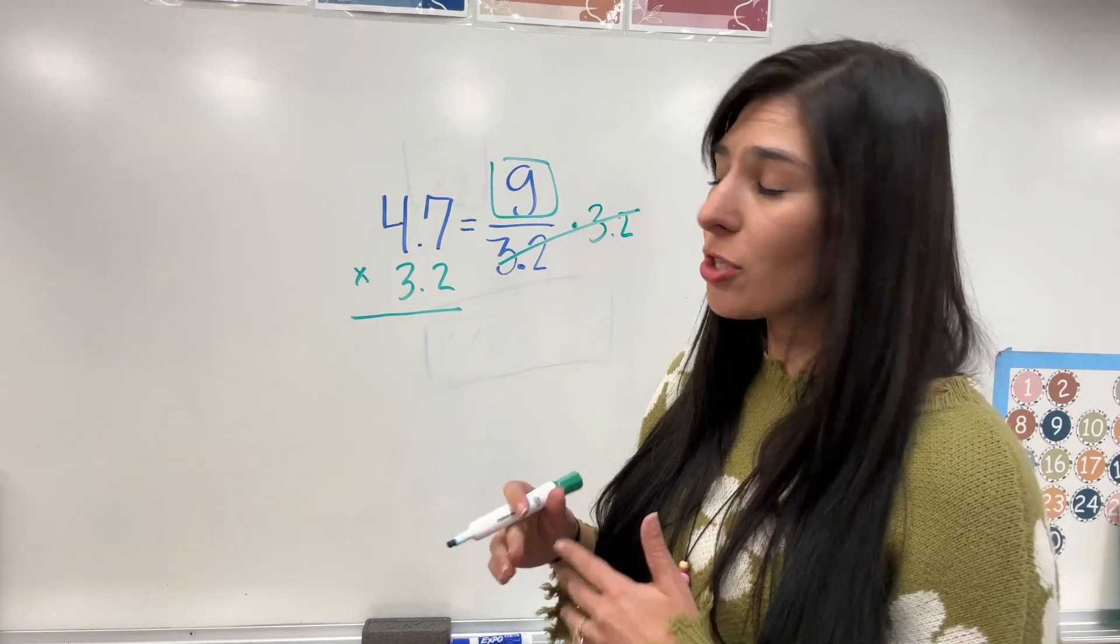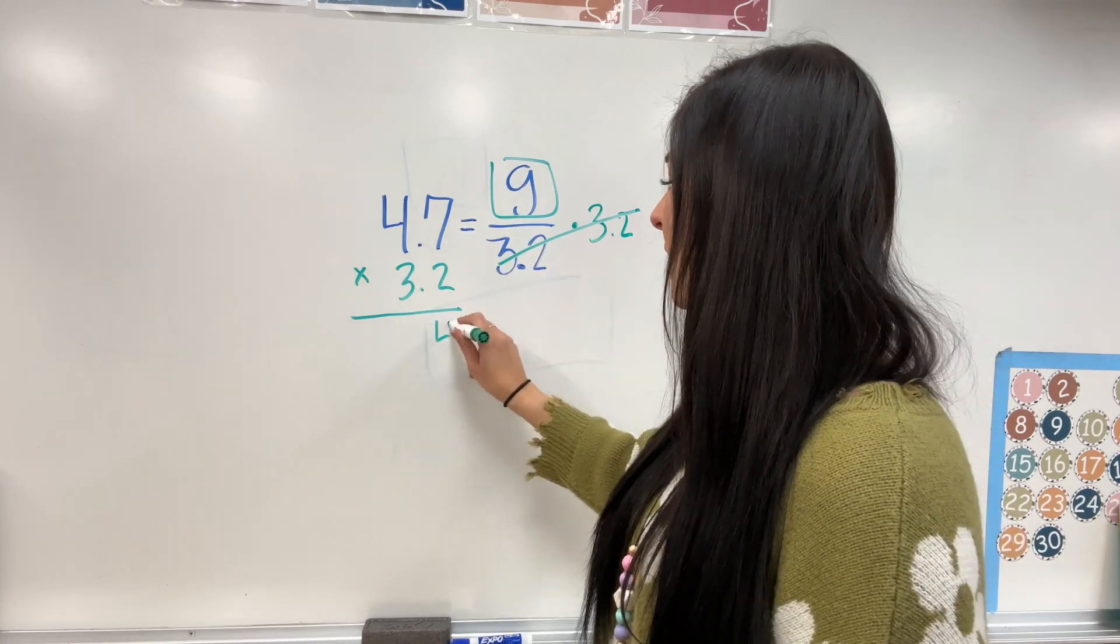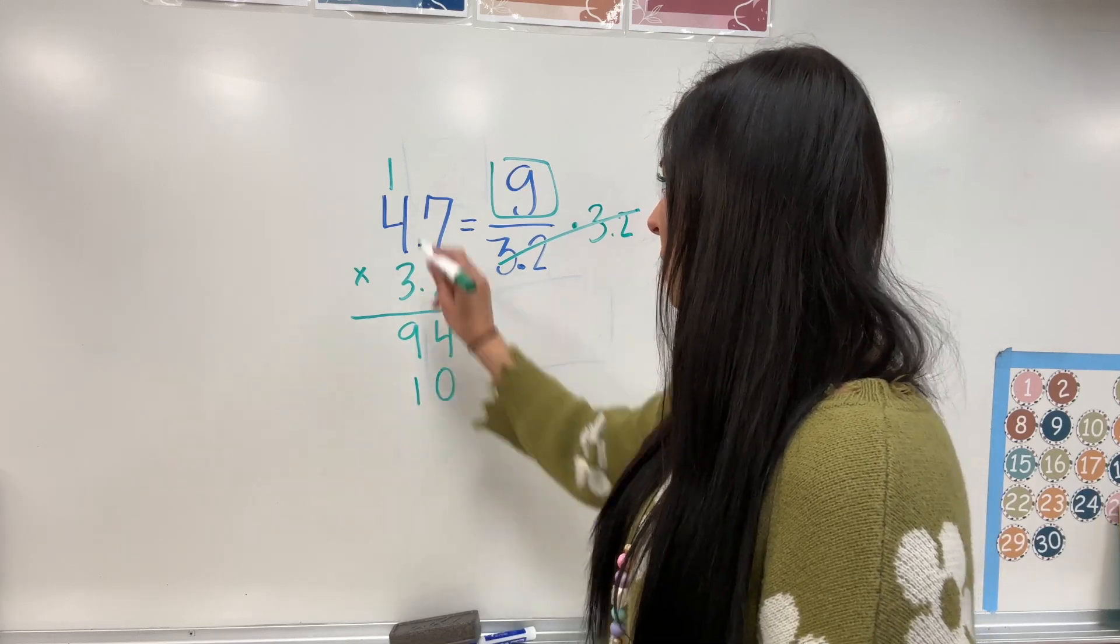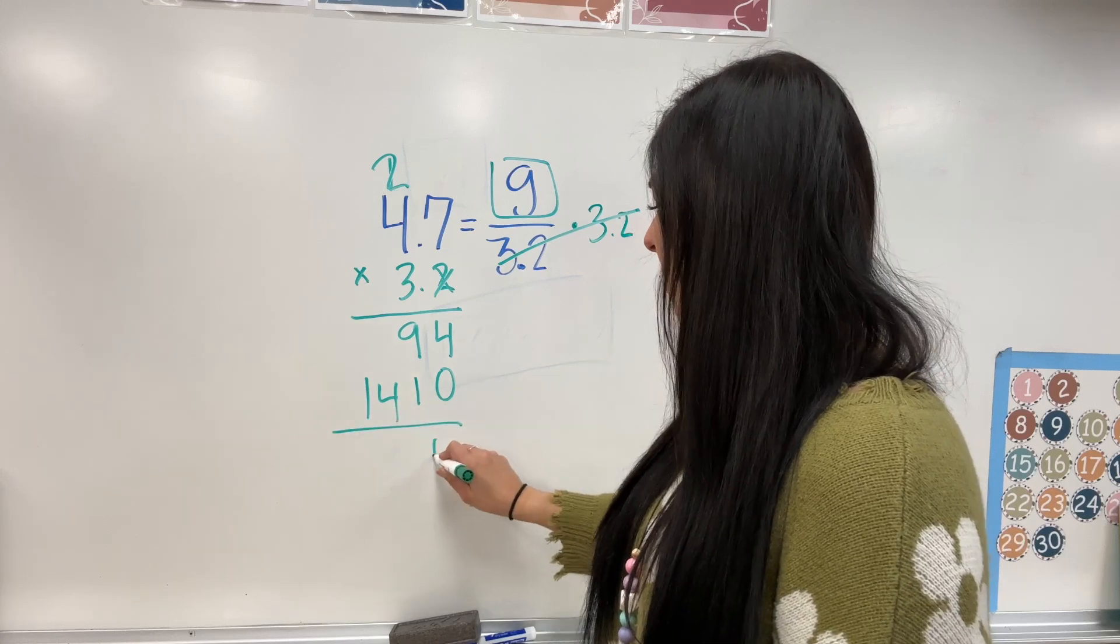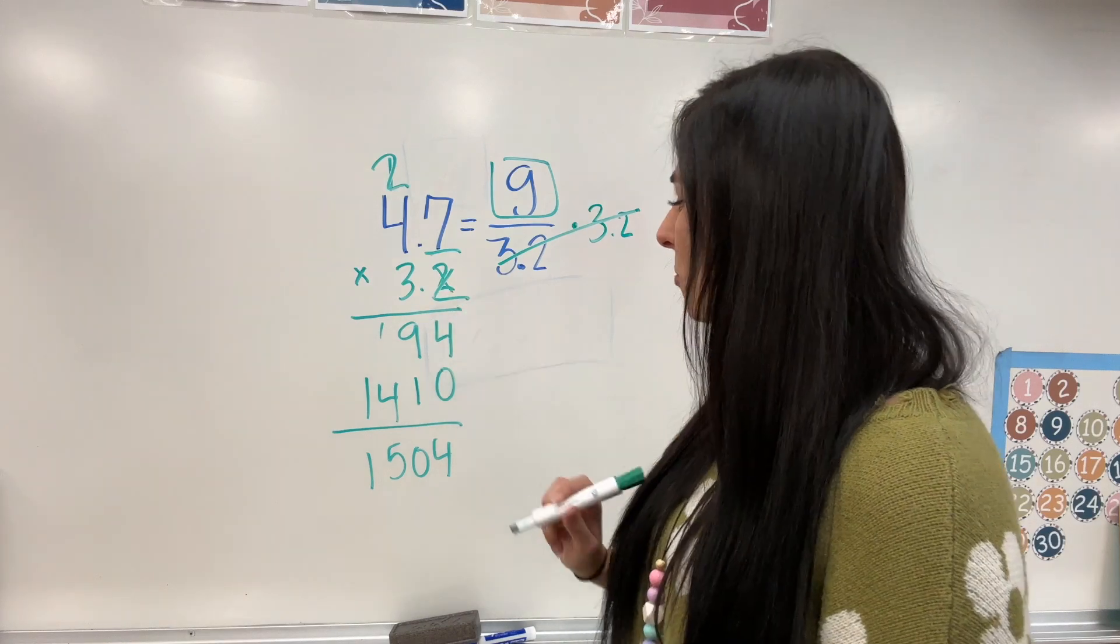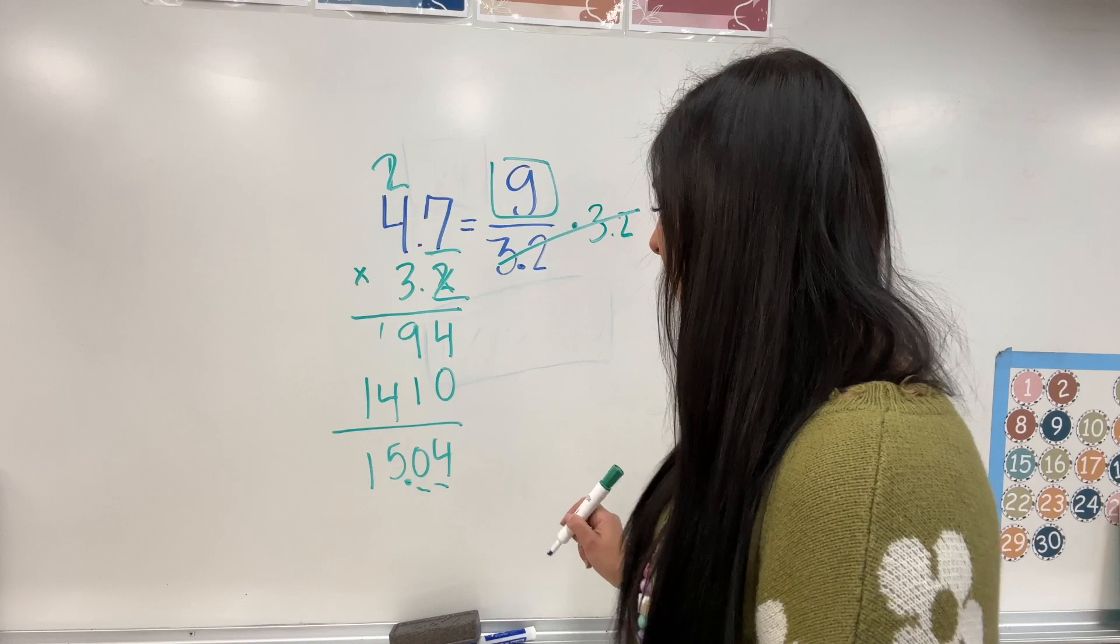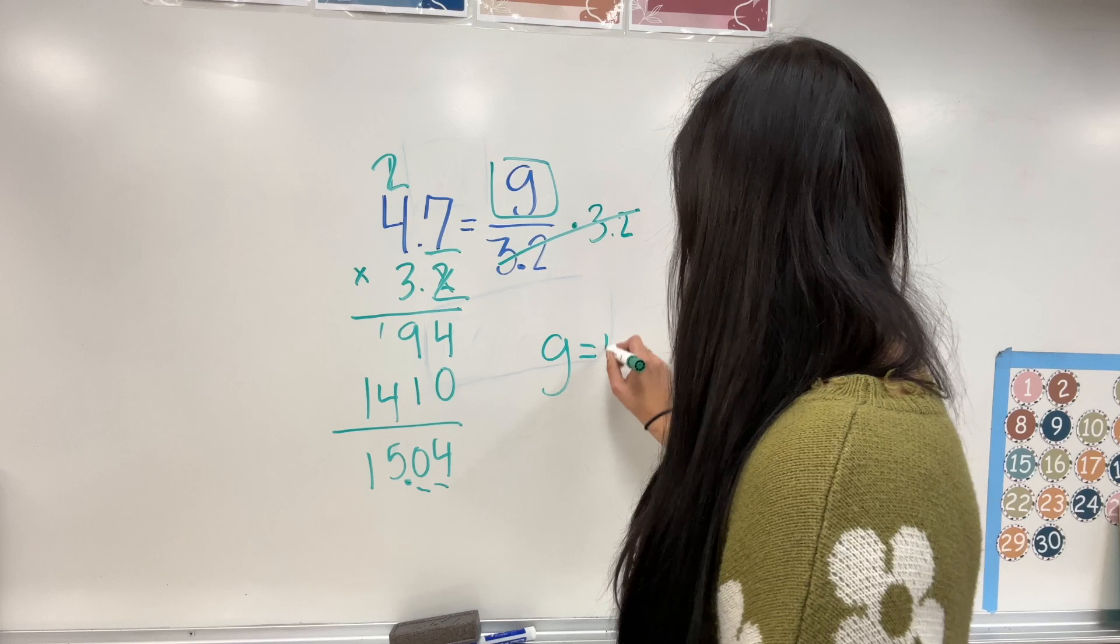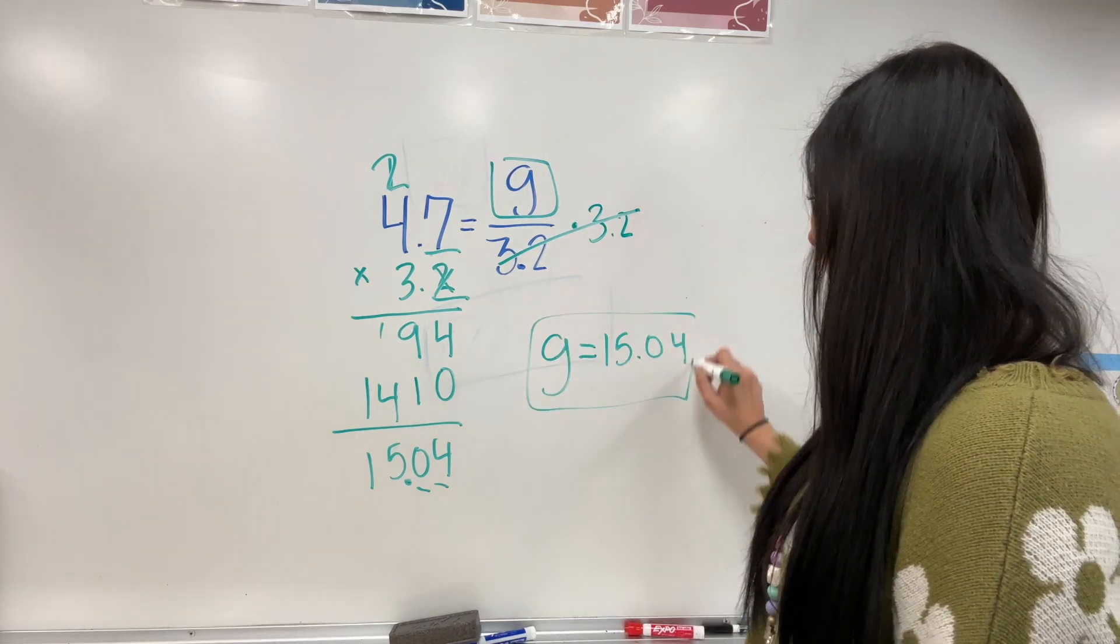Now, because it's multiplication, the decimals don't need to line up because I'm going to count them afterwards. In this case, they do line up. 7 times 2, I have 14. 2 times 4, 8 plus 1 gives me 9. Cross it. Drop it. Add a 0. Switch. 3 times 7, 21. That's 2. 4 times 3 is 12. 13, 14. Add them all up. 4, 10, 5, 1. Now, I have 2 decimal spaces. So, I get to jump two decimal spaces, giving it 15.04. So, g equals 15.04. That is our answer.